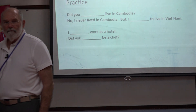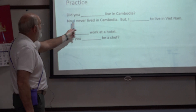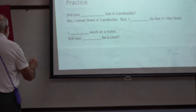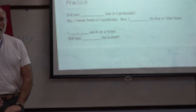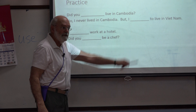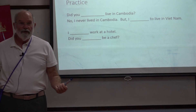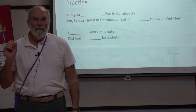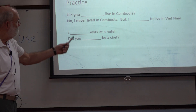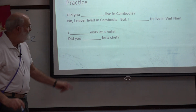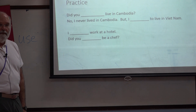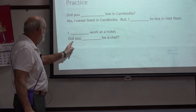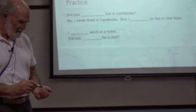Let's try a practice. Which one will we put here? 'Use' — no D — because it's a question. 'Did you use to live in Cambodia?' No, I never lived in Cambodia, but I used to live in Vietnam. And another example: 'Did you use to work at a hotel?' — yes, 'used' with a D in the statement.